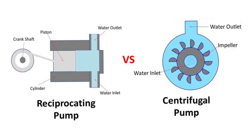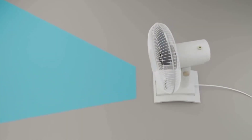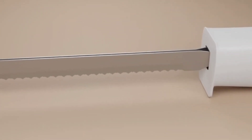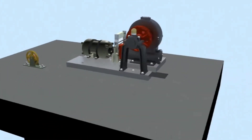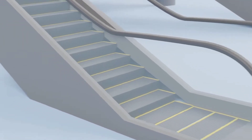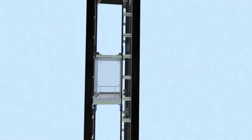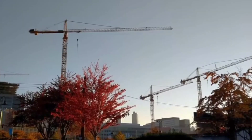Now let's look at the applications of DC motors. Shunt DC motors, owing to their fairly constant speed and medium starting torque, are used in centrifugal and reciprocating pumps, lathe machines, blowers and fans, drilling machines, milling machines, and machine tools. Series DC motors, owing to their high starting torque and variable speed, are used in conveyors, hoists and elevators, cranes, and electric locomotives.